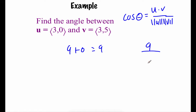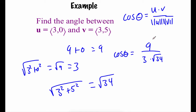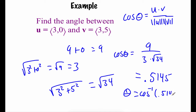Setting up the fraction with 9 on top, we find the magnitude of u: square root of 3² + 0² = square root of 9 = 3. For the magnitude of v: square root of 3² + 5² = square root of 9 + 25 = square root of 34. This gives us the cosine of theta, so we punch the right-hand side into a calculator to get a decimal approximation of 0.5145. Then theta equals the inverse cosine of 0.5145, and we get an angle of 59.04 degrees.